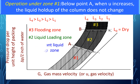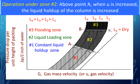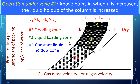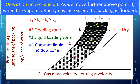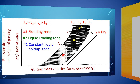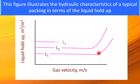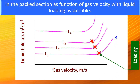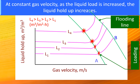Operation under zone 1: below point A, when U is increased, the liquid hold-up of the column does not change. This is the constant liquid hold-up zone. Operation under zone 2: above point A, when U is increased, the liquid hold-up of the column increases. This regime is called the loading zone. Operation under zone 3: as we move further above point B, when the vapor velocity is increased, the packing is flooded. This regime is called the flooding zone. This figure illustrates the hydraulic characteristics of a typical packing in terms of the liquid hold-up in the packed section as a function of gas velocity with liquid loading L as variable. At constant gas velocity, as the liquid load is increased, the liquid hold-up increases.